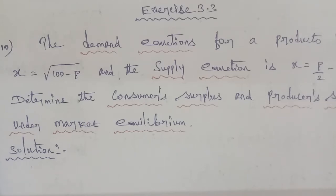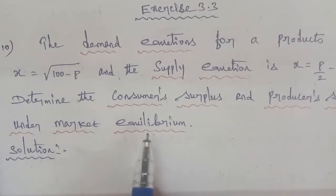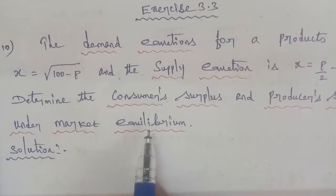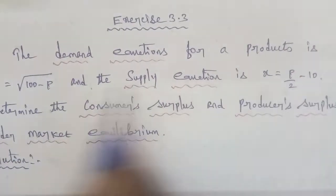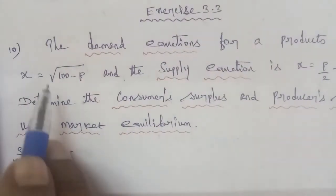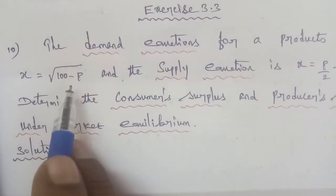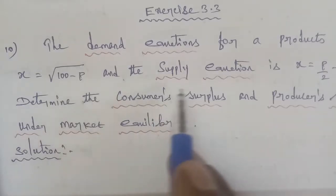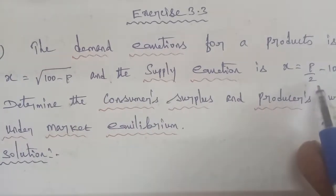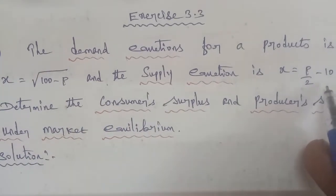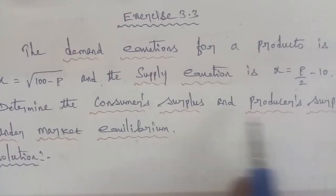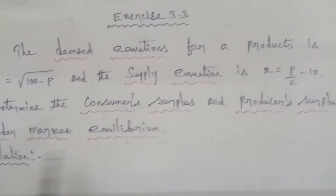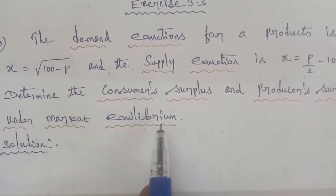Hi students, I am Gopinath. 12th Business Maths, Exercise 3.3, question number 10. The demand equation for a product is X is equal to square root of 100 minus P, and the supply equation is X is equal to P by 2 minus 10. Determine the consumer surplus and the producer surplus under market equilibrium.